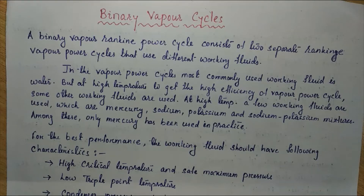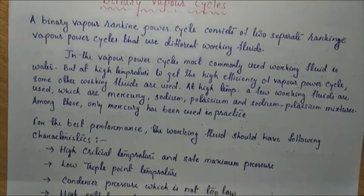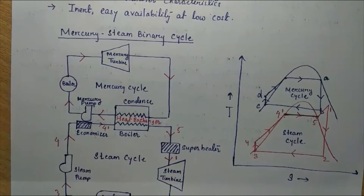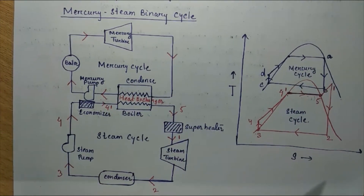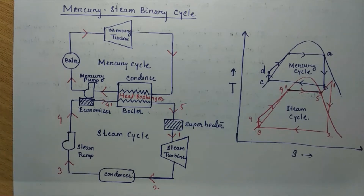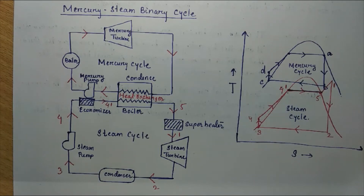Here we discuss basically the mercury-steam binary cycle. Let's see the schematic diagram of the mercury-steam binary cycle and its corresponding T-S diagram. We consider this is the mercury cycle and this is the steam cycle. The steam cycle consists of the basic four components: boiler, turbine, condenser, and pump.